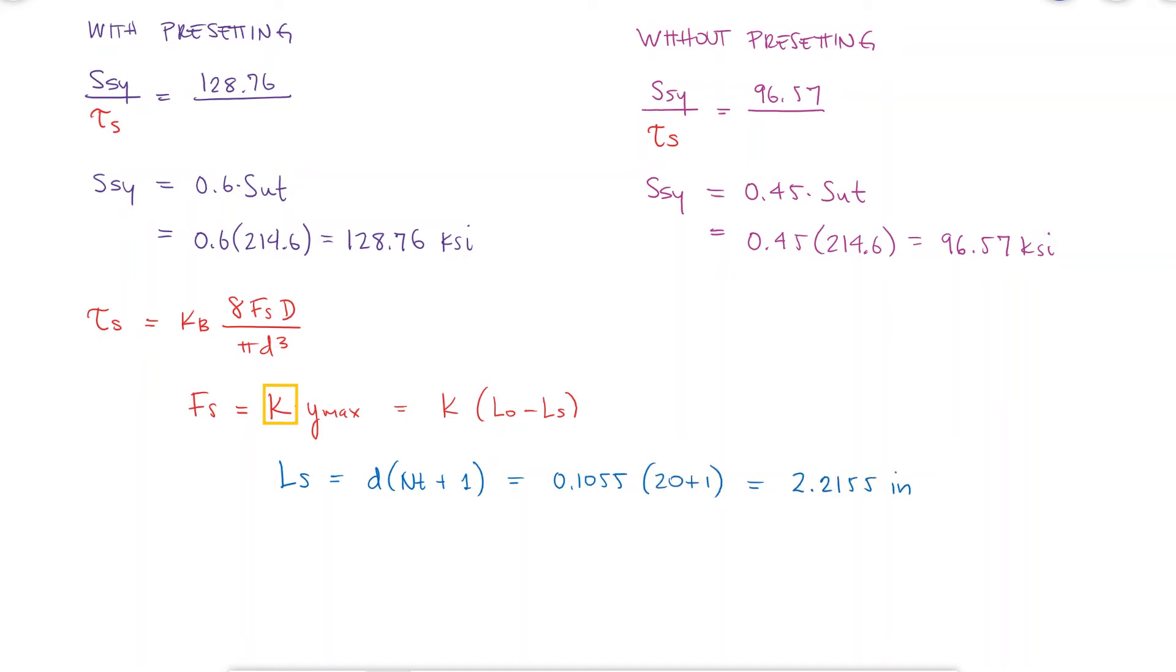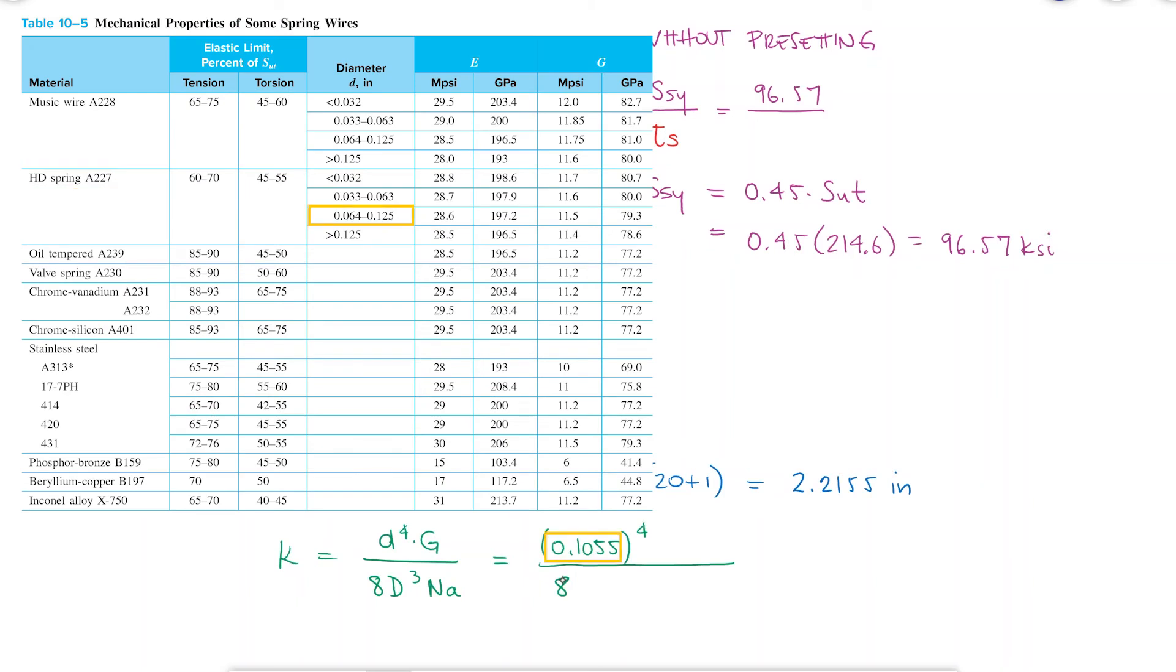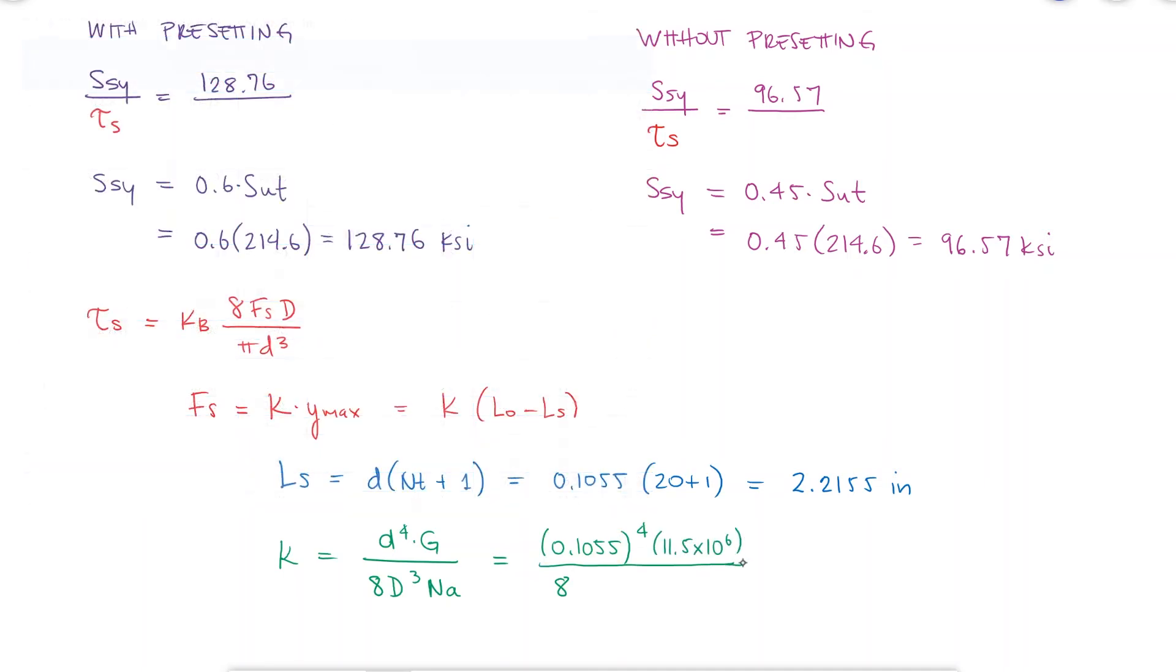For the spring constant, we need the shear modulus, the nominal coil diameter capital D, and the number of active turns. For a hard-drawn wire with a diameter in the range between 64 and 125 thousandths of an inch, we find that the shear modulus is 11.5 Mpsi. The coil diameter will be the outer diameter minus the wire diameter like we've done previously, and the number of active coils is equal to the total number of coils for a plain-end spring.